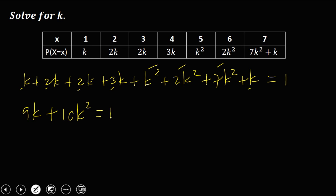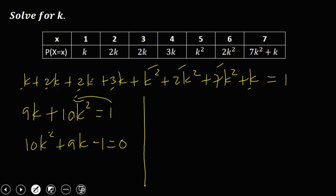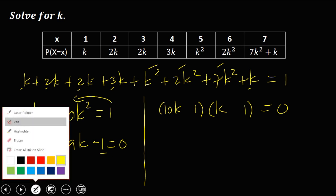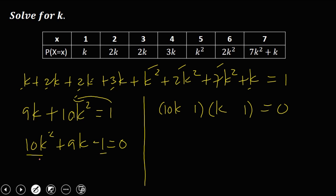Since this is a quadratic equation, equate to 0 and rearrange from the highest exponent: 10K squared plus 9K minus 1 equals 0. Applying factoring — trial and error: factors of 10K squared are 10K times K, and factors of 1 are 1 and 1. Using cross-multiplication to check the middle term, which should be positive 9K, the factors are (10K minus 1)(K plus 1).